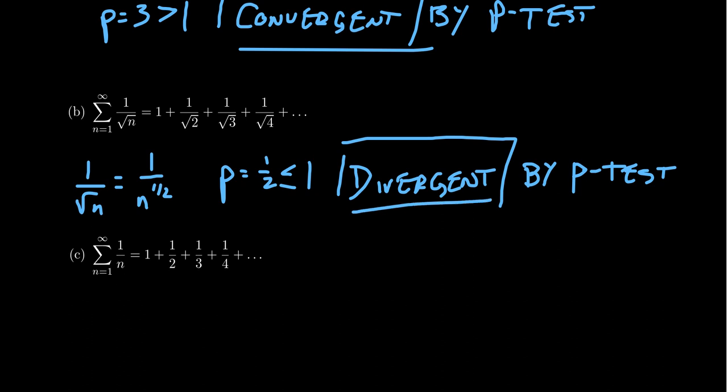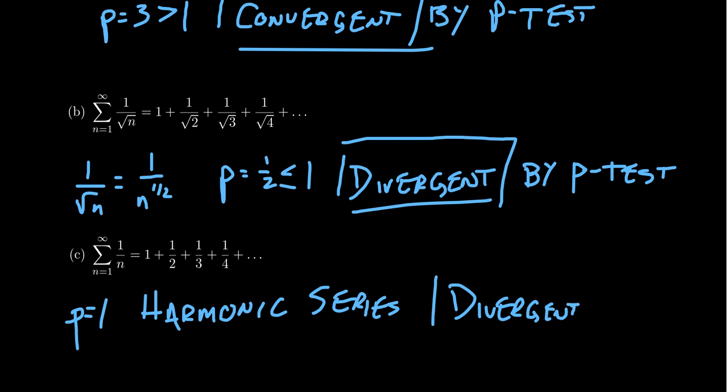For a third example, the series sum from n equals 1 to infinity of 1 over n is a p-series with p equals 1. This is the harmonic series, a very important example. It sits on the boundary—flipping from convergence to divergence as we shift from p greater than 1 to p less than 1. At p equals 1, the harmonic series is divergent by the p-test. Determining convergence of a p-series requires only identifying the p value and checking whether p is greater than 1 or less than or equal to 1.